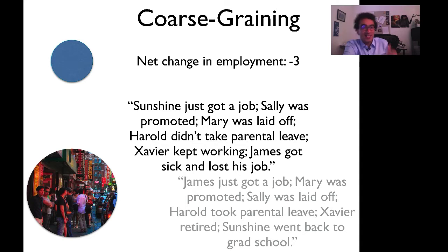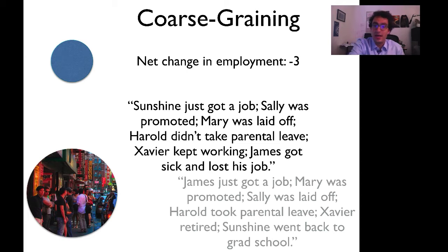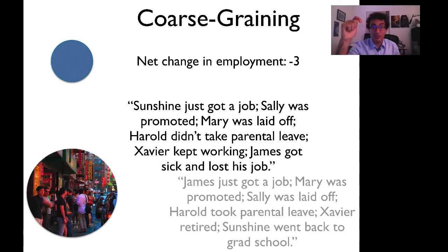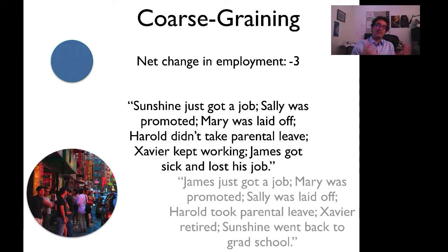These are very different descriptions at the micro level. But from the point of view of the construction of the macro-level economic variable — the number of people who were unemployed or employed at a certain point in time — those two descriptions are identical. What coarse graining does is merge states of the world. We use the term equivalence classes: these two descriptions are in the same equivalence class, which contains all descriptions of the world in which the net change in employment was minus three.